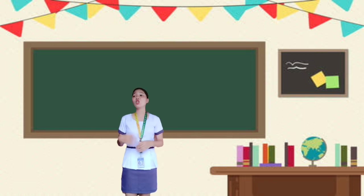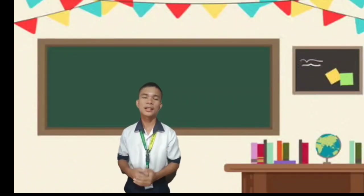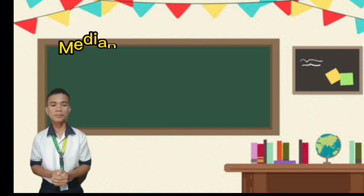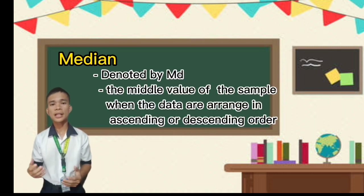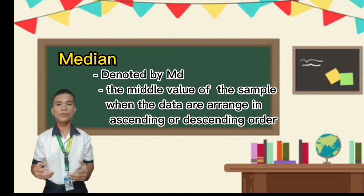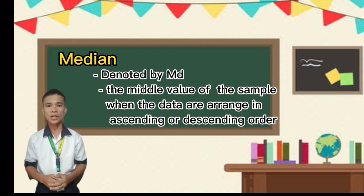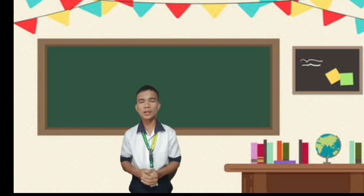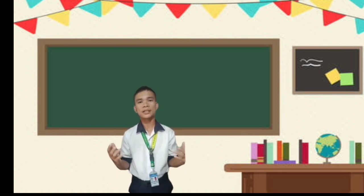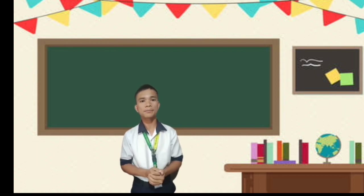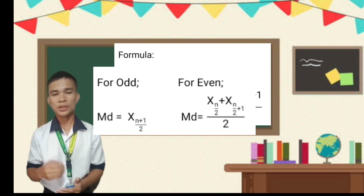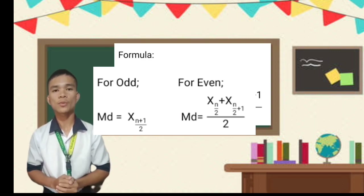Let's proceed to the second measure of central tendency, which is the median, to be discussed by Mr. Anas. The median is denoted by Md. It is the middle value of the sample when the data are arranged in ascending or descending order. Always remember that the median will either be a specific value or will fall between two values.